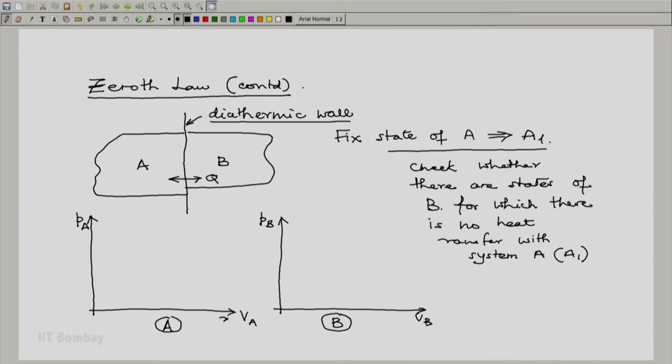If they are not fluid systems, in general this could be some property XA, some other property YA of system A, and this is some property XB of system B, some property YB of system B.